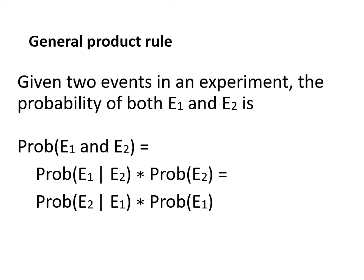The general product rule tells us that given two events in an experiment, the probability of both e1 and e2 happening is equal to probability of e1 given e2 times probability of e2, and also probability of e2 given e1 times probability of e1.